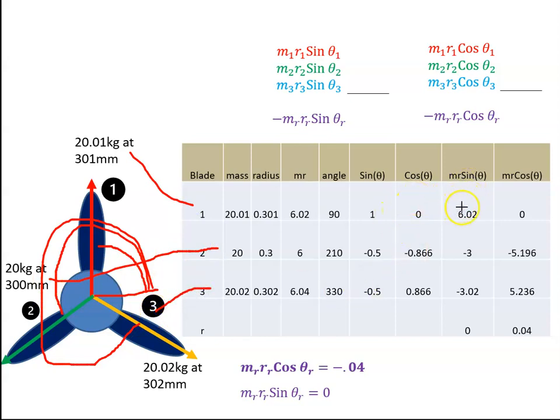And I can get MR sine theta and MR cosine theta for each one of these values. So the sine of 90 multiplied by 6.02 gives me 6.02. Cosine of 90 by 6.02 gives me 0, and so forth. So I've got all my values here.